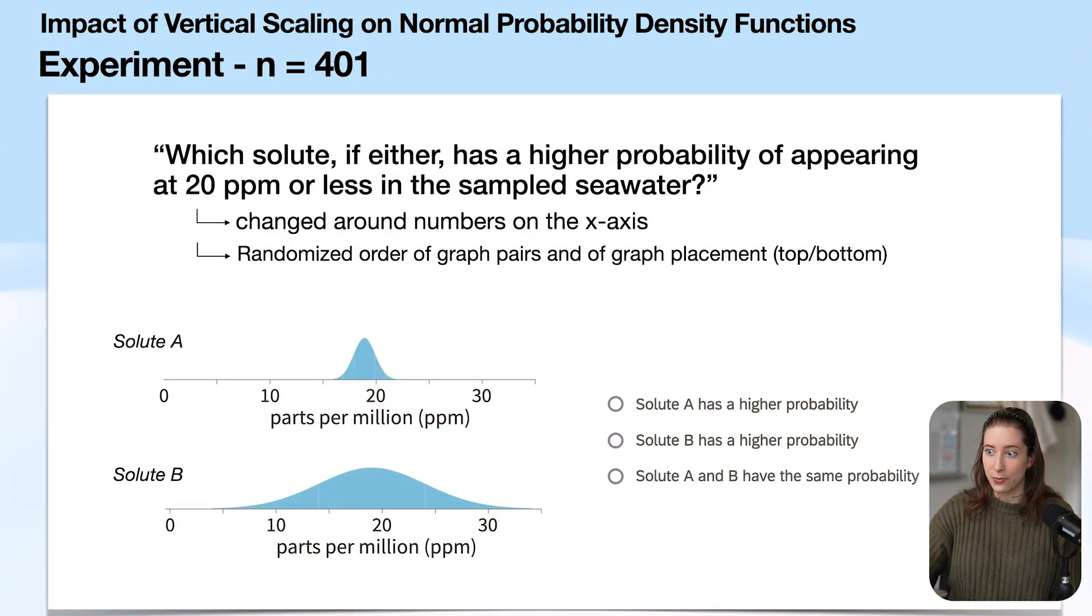We asked each participant to answer this question a number of times. This is the same question we just walked through: which solute, if either, has a higher probability of appearing at a certain number or less in sampled seawater. And we changed around the numbers on our x-axis and randomized the ordering of graph pairs and graph placements so that people wouldn't catch on too much and we had a little bit more test-retest reliability. And the correct answer, unless the two PDFs were exactly the same, was always that the solute with a smaller standard deviation, so in this case solute A, has a higher probability.